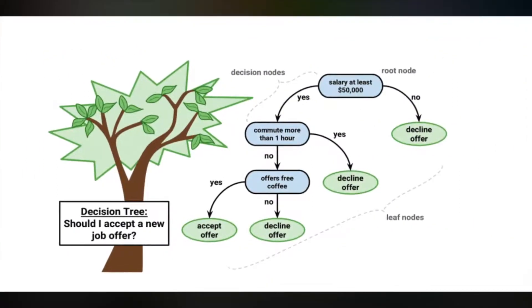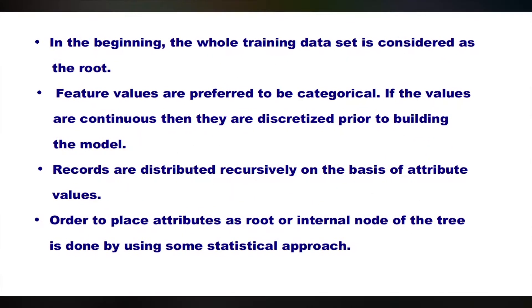There are a few assumptions made while creating a decision tree. In the beginning, the whole training dataset is considered as the root. Feature values are preferred to be categorical. If the values are continuous, then they are discretized prior to building the model. Records are distributed recursively on the basis of attribute values. And lastly, the order to place attributes at root nodes or internal nodes of the tree is done by using some statistical approach.